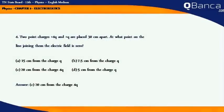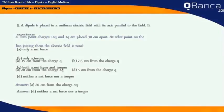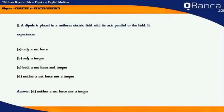Two point charges +4q and +q are placed 30 cm apart. At what point on the line joining them is the electric field zero? Answer: 20 cm from the charge 4q.